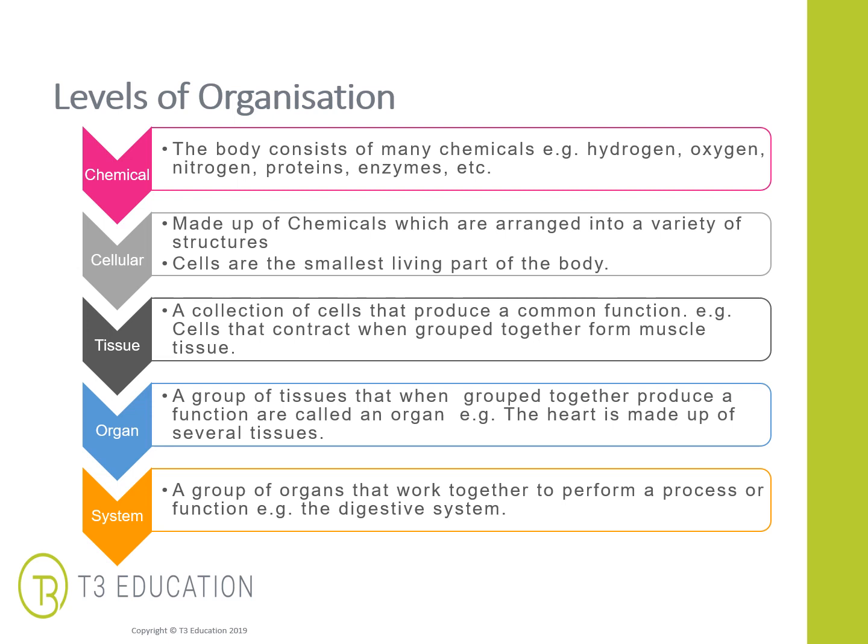Tissues are a collection of cells with a common function, and that's what differentiates the different types of tissues. For example, a group of cells that contract when grouped together form muscle tissue. An organ is a group of tissues that, when grouped together, produce a function. For example, the heart is made up of several types of tissues that all work together to create the function of the heart.